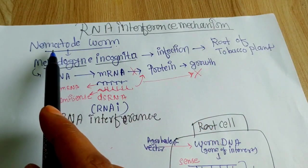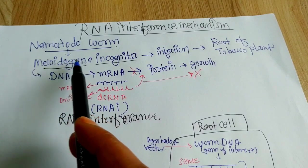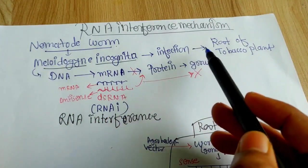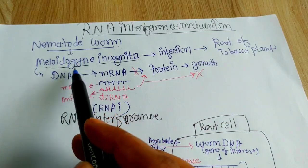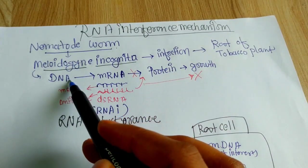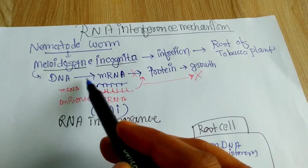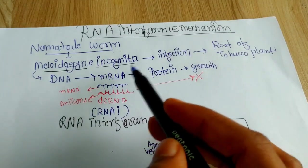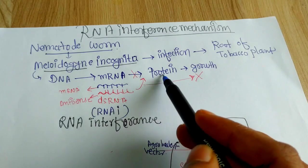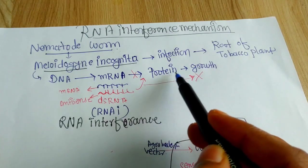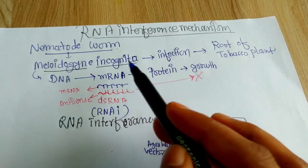We know that a nematode worm, Melodogynia incognita, infects the roots of the tobacco plant. This worm has DNA and this DNA produces mRNA by the process called transcription. And this mRNA by the process of translation produces protein, which helps in the growth of that nematode.